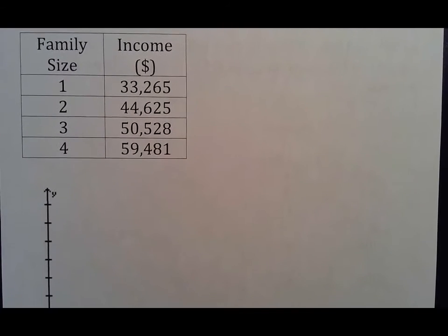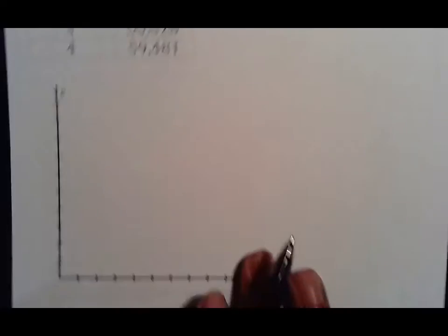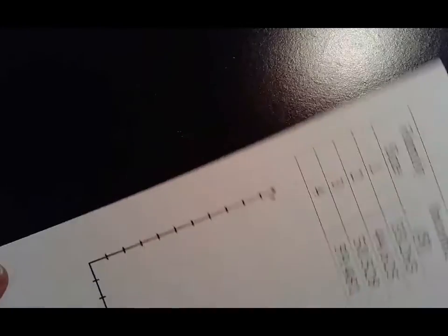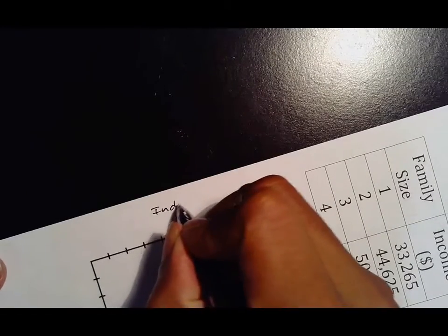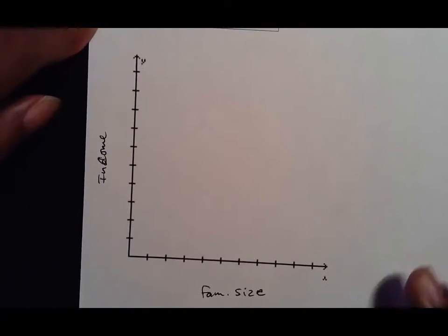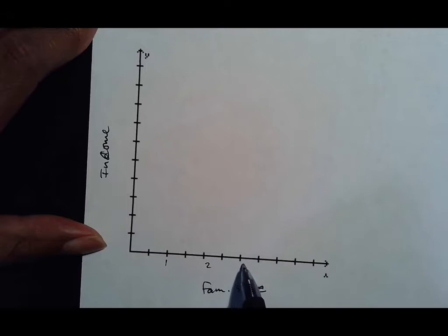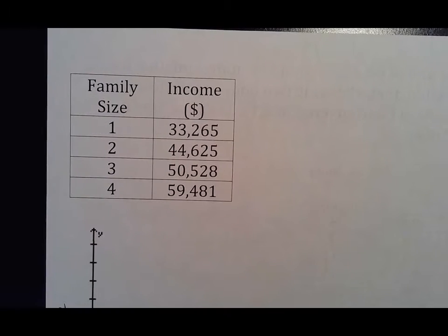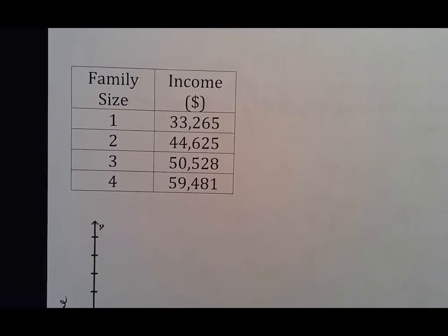Another one, family size, income. Whatever is listed first goes on the bottom. Whatever is listed second is on the side. It's your dependent variable. Family size goes from one to four. So I guess it's easier just to go one, two, three, four. You don't need to go all the way across, but it does help to get as much across this thing as possible.